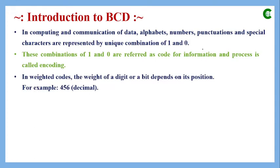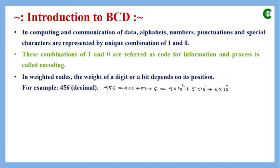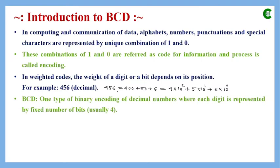One important type of code is the weighted code, where the weight of a digit or bit depends on its position. For example, the decimal number 456 can be represented as 400 plus 50 plus 6, which is 4 multiplied by 10², plus 5 multiplied by 10¹, plus 6 multiplied by 10⁰. So the weight of 4 is 400, the weight of 5 is 50, and the weight of 6 is 6.